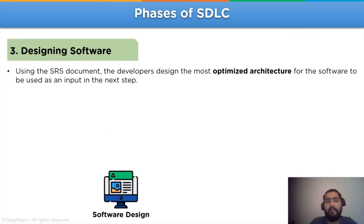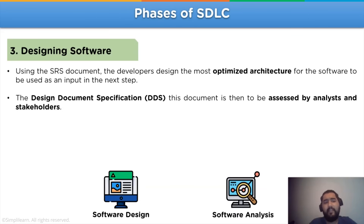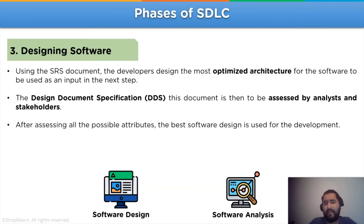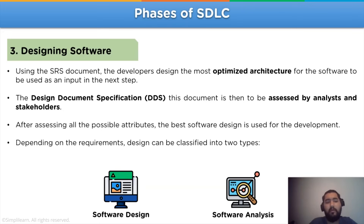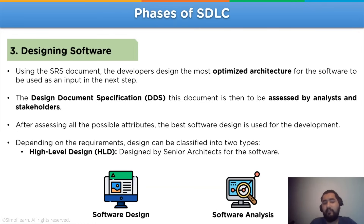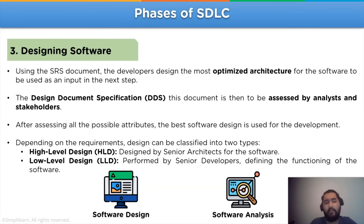We have the third step: designing the software. In this step, the SRS document is used by the developer to select the most optimized architecture for the development of the software. The developed architecture is documented using the DDS document, also known as the design document specification, which is shared with the analyst and stakeholders to check multiple attributes of the software. After assessing all possible attributes, the best software design is selected. Depending upon the requirements, different designs are used — the first is known as high level design and the other as low level design.